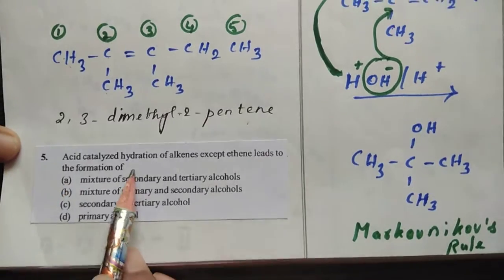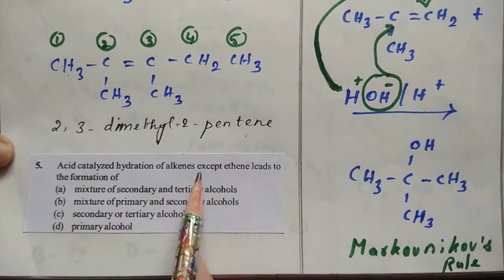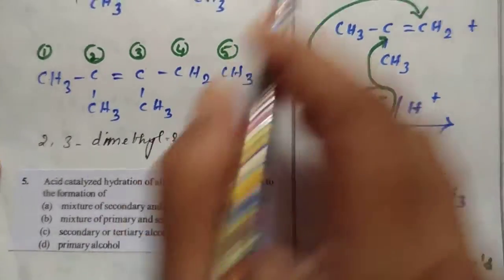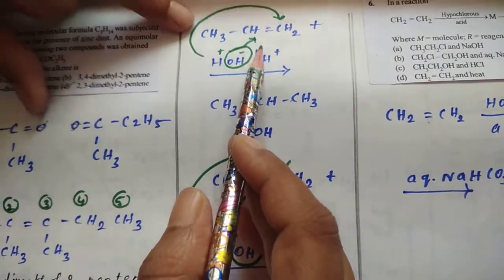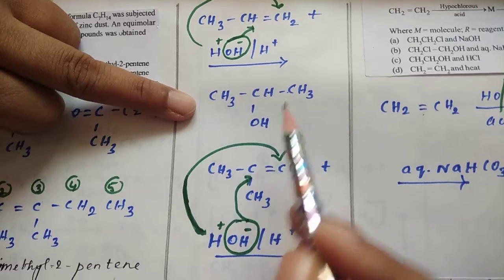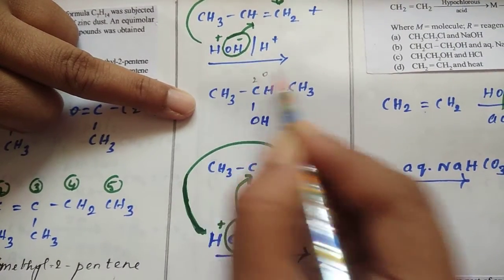Then the fifth question: acid-catalyzed hydration of alkenes except ethene leads to the formation of... except ethene means the next member you have to take, propene. Here I am writing propene. If propene undergoes hydrolysis, we get isopropyl alcohol. Again, this is a secondary alcohol.